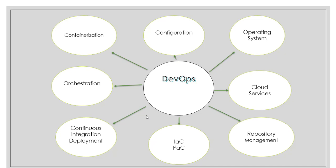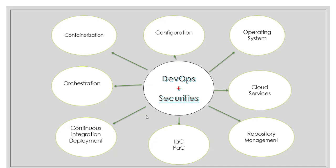To be the best DevOps engineer, you need a solid understanding of Linux, any cloud service, repository management, infra as code, pipeline as code, CI/CD, orchestration, containerization, and configuration management. On top of that, you need to know DevOps security — what we call DevSecOps. Security at each phase will include things like pipeline security, code coverage, SonarQube, and many more. This course is focused on all these paradigms.